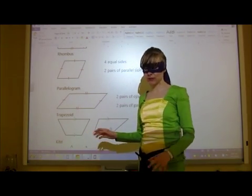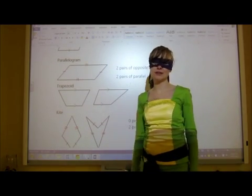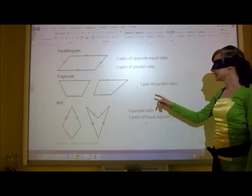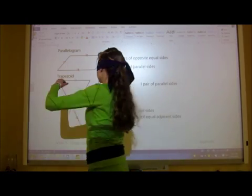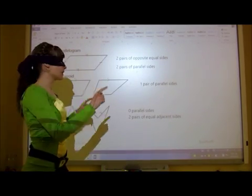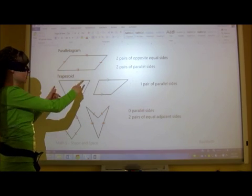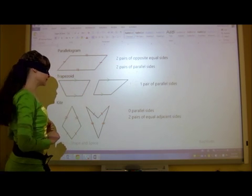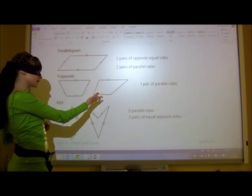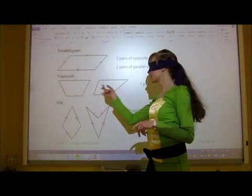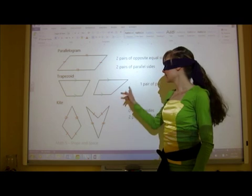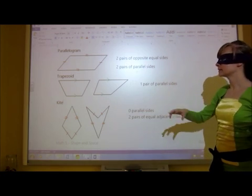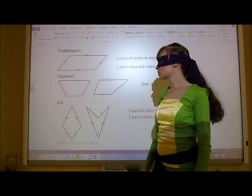Next up, we're going to look at something quite different — as different as you can get with only four sides. We've got a trapezoid. A trapezoid has one pair of parallel sides — only one pair. These sides are parallel, but these other ones cannot be parallel; if we extend them they're going to meet. If a shape has one pair of parallel sides and the rest are not, then it is a trapezoid.